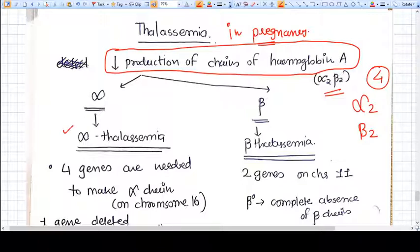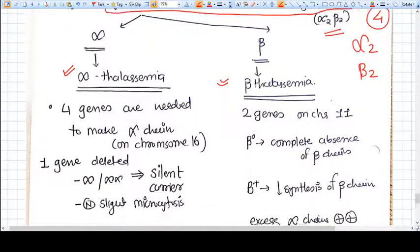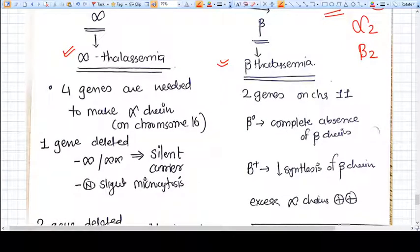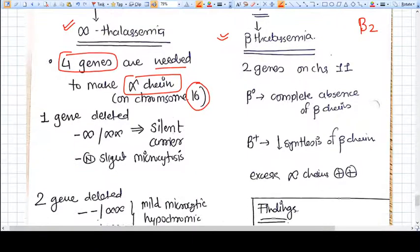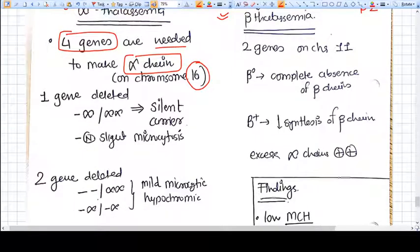If beta chain synthesis is decreased, it's called beta thalassemia. You need to understand the basic genetics: to make an alpha chain we need four genes. These genes are located on chromosome number 16.